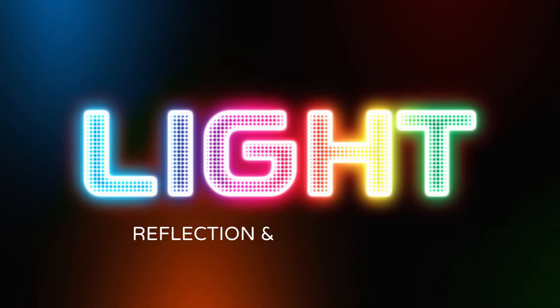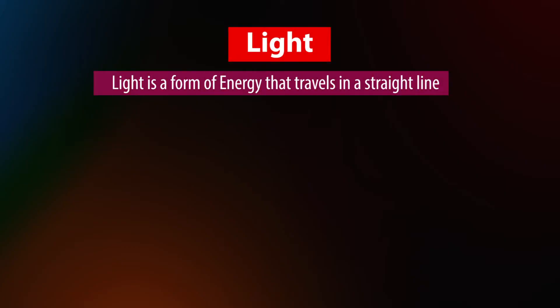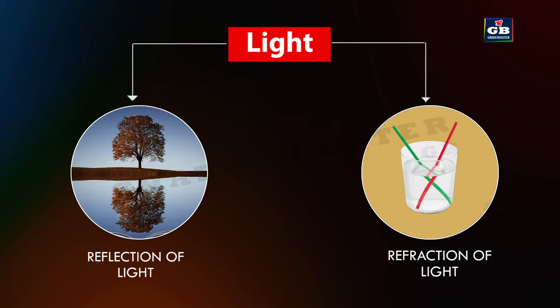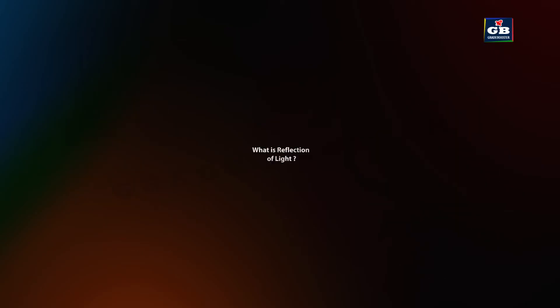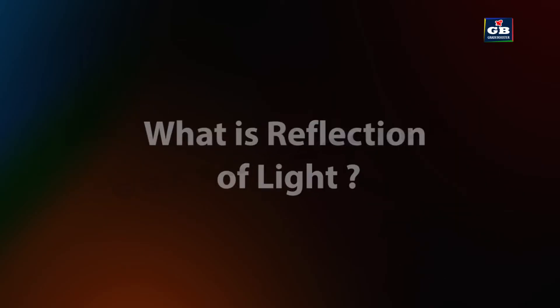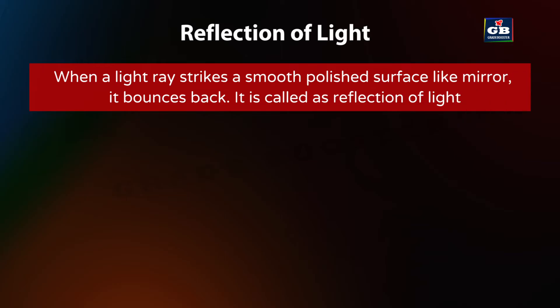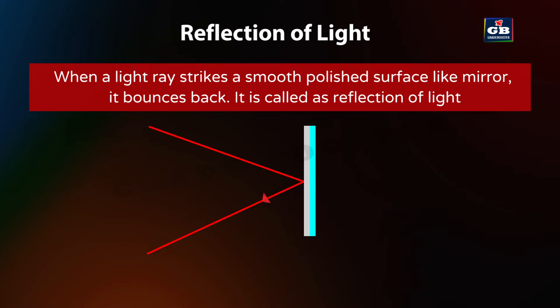Light reflection and refraction. We all know that light is a form of energy; it travels in a straight line. In this chapter we are going to study the reflection and refraction of light. When a light ray strikes a smooth polished surface like a mirror, it bounces back. This is called reflection of light.